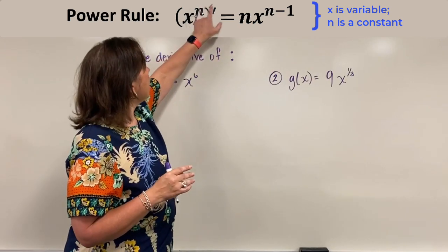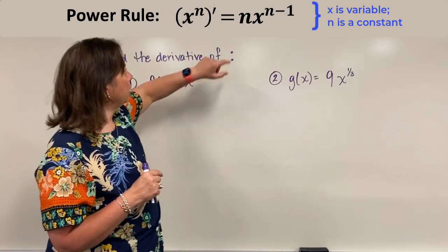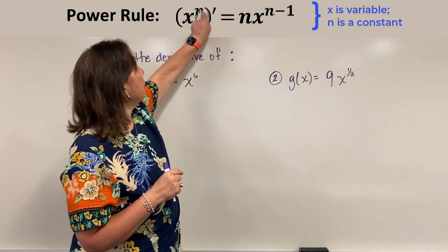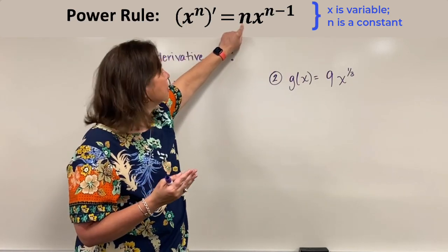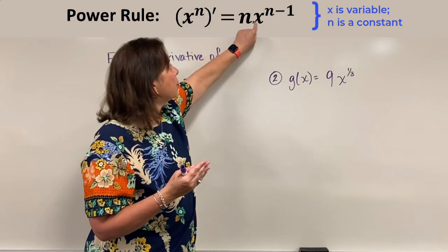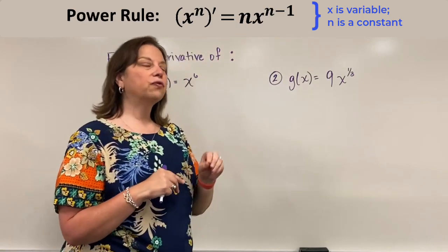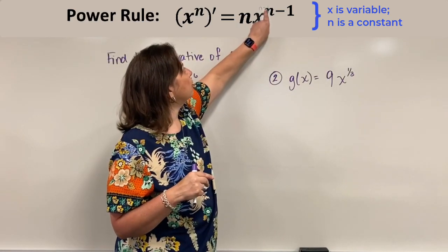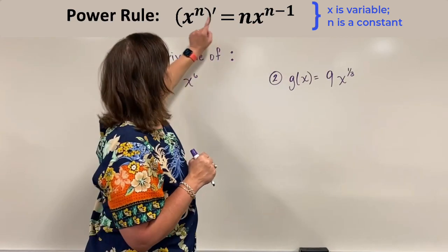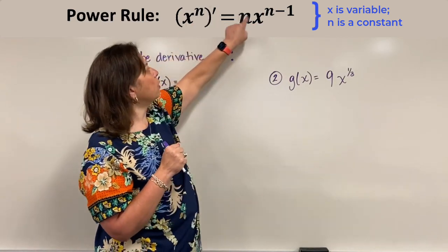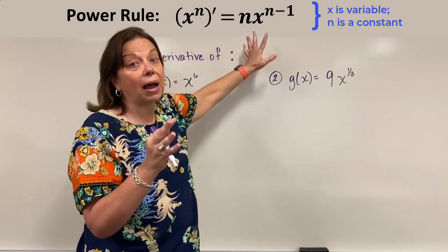I can take the derivative of that power function by bringing that power down in front as a new coefficient in front of the x, and multiplying x to the new power that is formed by simply subtracting 1 from the old power. So I would get: the derivative of x to the n is equal to n times x to the n minus 1 power.